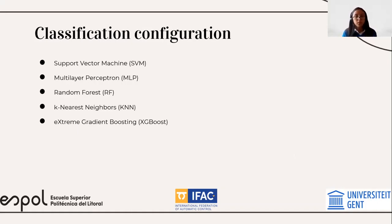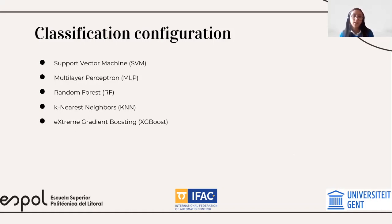For the classifiers, we used five: the support vector machine or SVM, the multilayer perceptron or MLP, the random forest or RF, the k-nearest neighbors or KNN, and extreme gradient boosting or XGBoost.